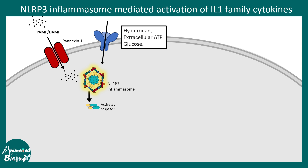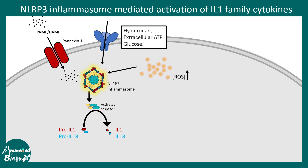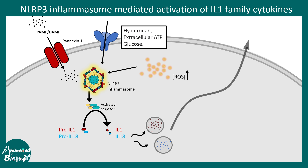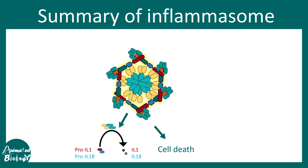When the inflammasome is activated, caspase activity spikes up and it can cleave the pro-form of interleukin-1 and interleukin-18 into their active forms, which are then secreted. ROS increase can also activate the inflammasome, and these secreted cytokines can lead to an inflammatory response in the nearby tissue.